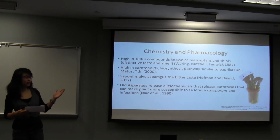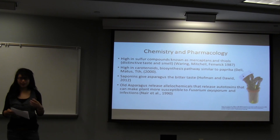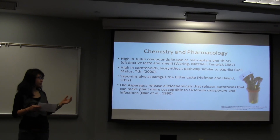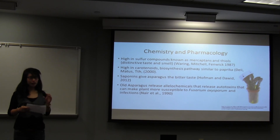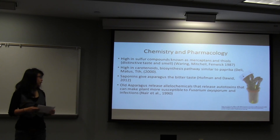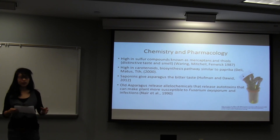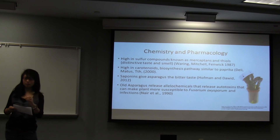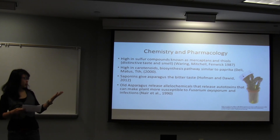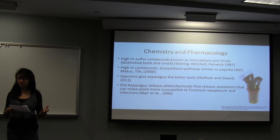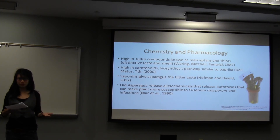Some basic chemistry and pharmacology: we all know asparagus as the vegetable that, when you urinate after eating it, produces a distinct smell. This is due to compounds known as mercaptans and thiols, which are high sulfur compounds. Asparagus is also very high in carotenoids, which are great for antioxidants, and has a very similar biosynthesis pathway to paprika. It is very high in saponins, which give it its characteristic bitter taste, and are responsible for many of the compounds seen in biological activity. Old asparagus — past 15 years — produces autotoxins that help fight fungi, but at the same time act as autotoxins to the plant itself, making it even more toxic. This vicious cycle makes the plant more sickly, which is why you cannot keep planting asparagus after 10–15 years.